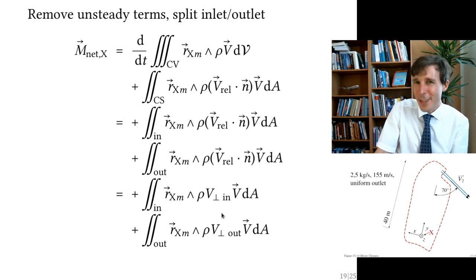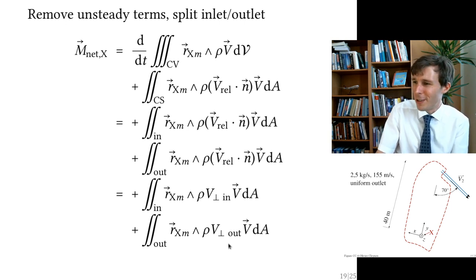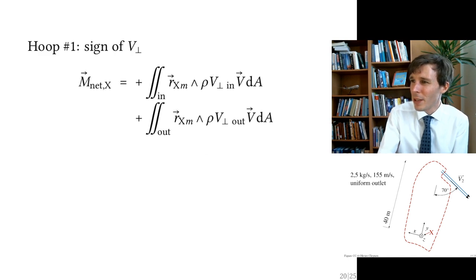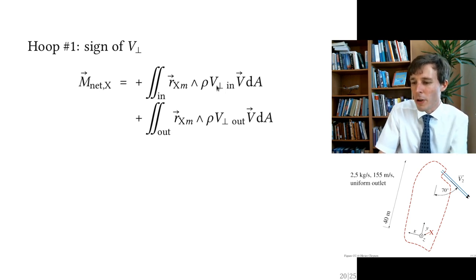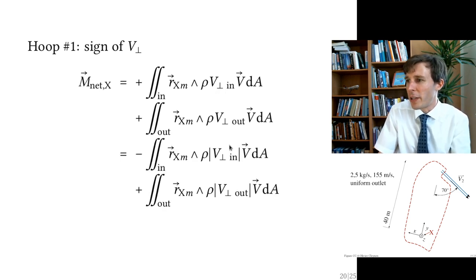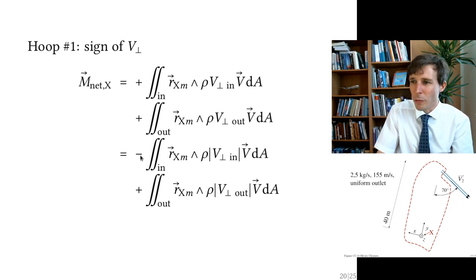The inlet term will be a negative number and the outlet term will be positive. When substituting actual values, we apply a minus sign at the inlet and a plus sign at the outlet.